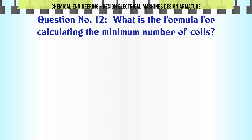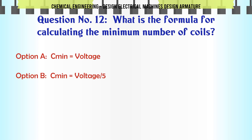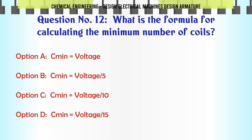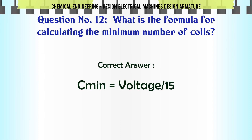What is the formula for calculating the minimum number of coils? Options: A) Th_min/voltage, B) Th_min/voltage × 5, C) Th_min/voltage × 10, D) Th_min/voltage × 15. The correct answer is Th_min/voltage × 15.